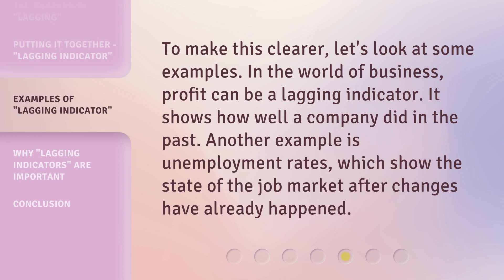To make this clearer, let's look at some examples. In the world of business, profit can be a lagging indicator — it shows how well a company did in the past. Another example is unemployment rates, which show the state of the job market after changes have already happened.